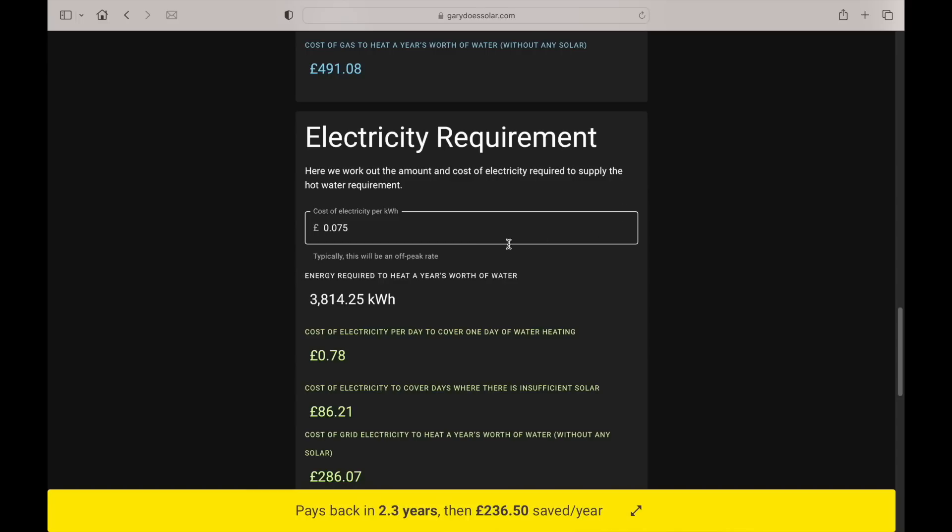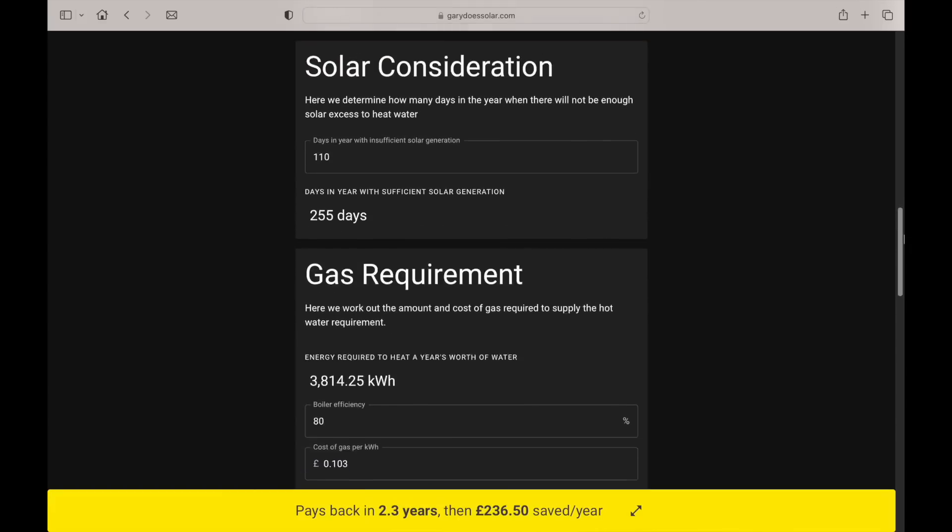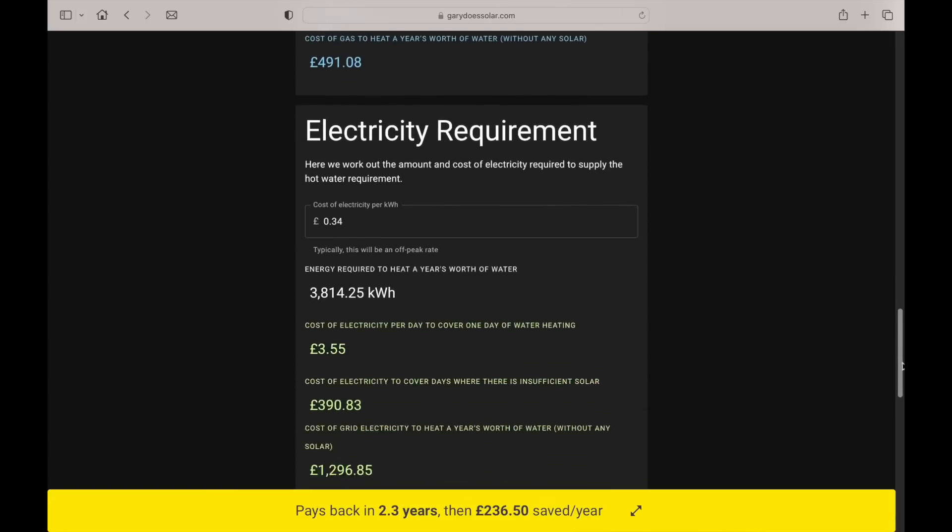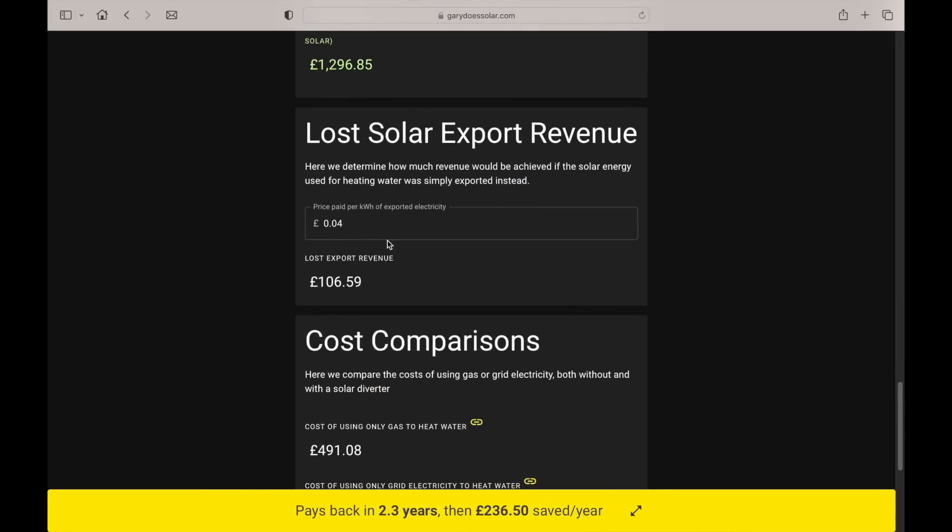If we use today's cost for electricity and gas in the UK, you can see that for a solar diverter costing around £535, including installation, you could expect a payback in just under two and a half years. And this figure assumes a solar export rate of four pence per kilowatt hour. In other words, covering the income lost from exporting the same energy instead.